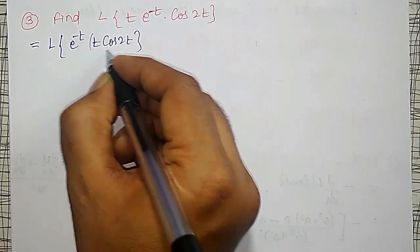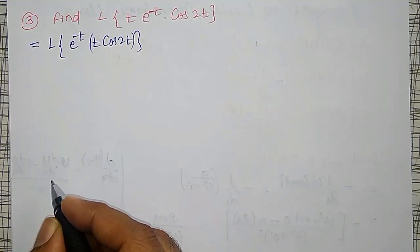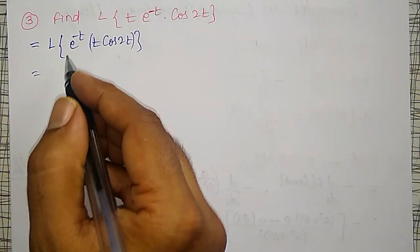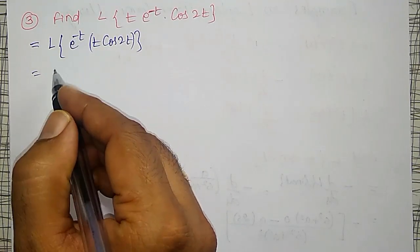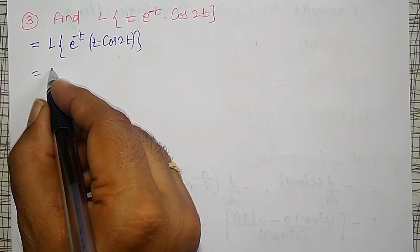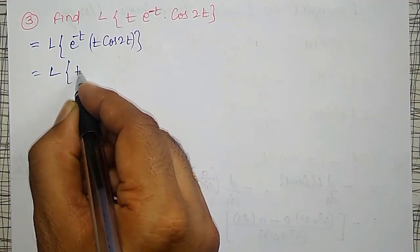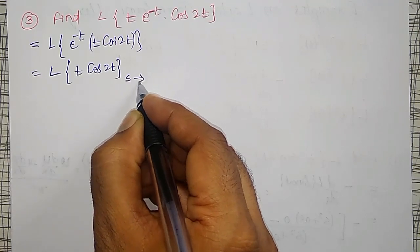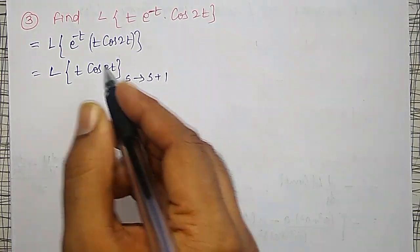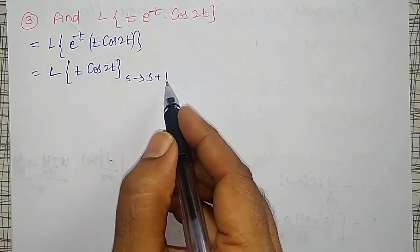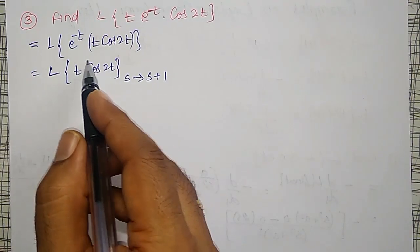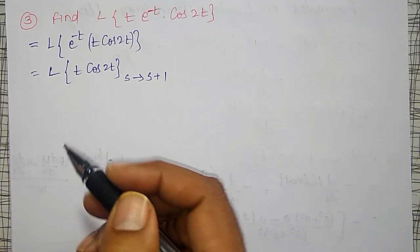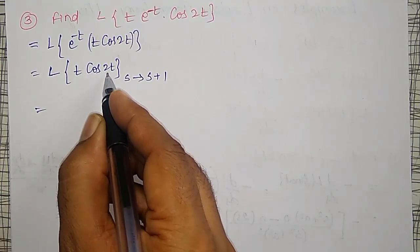Then I have to find the Laplace transform of t times cos 2t, which I can write as minus d by ds of the Laplace transform of cos 2t. The Laplace transform of cos 2t is s divided by s squared plus 4. In this, s is later replaced by s plus 1.